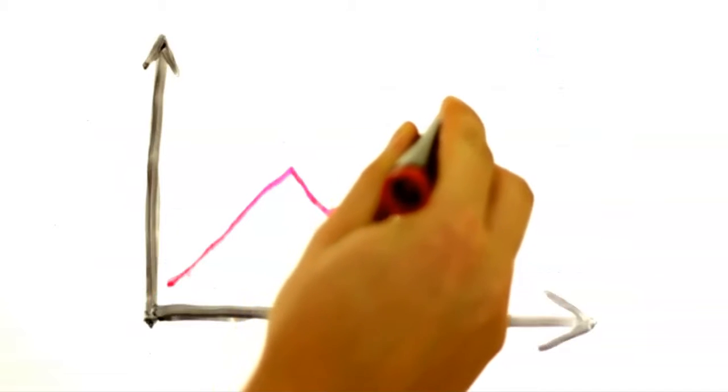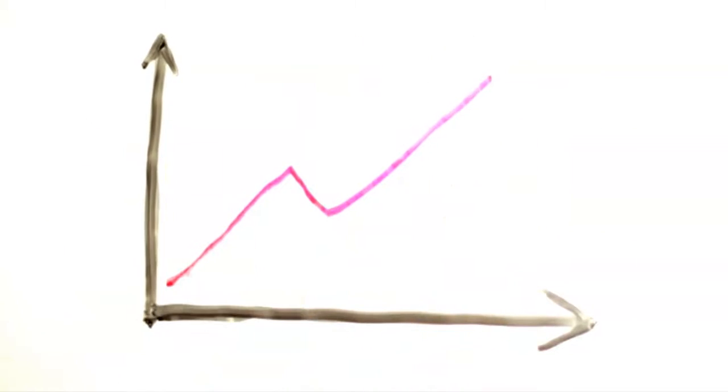This man is drawing a line graph. The line goes up, then down, then up again.